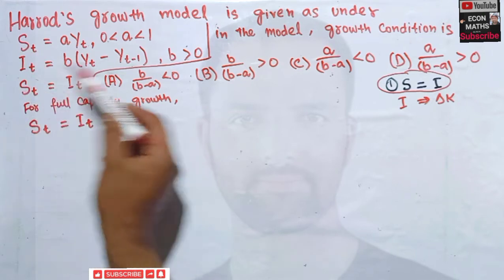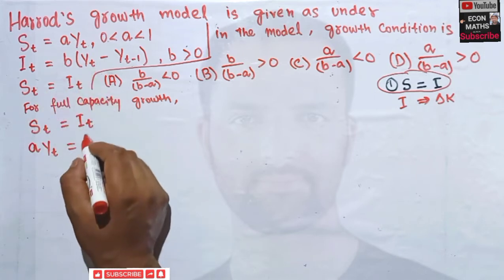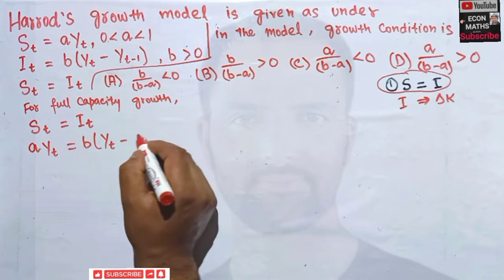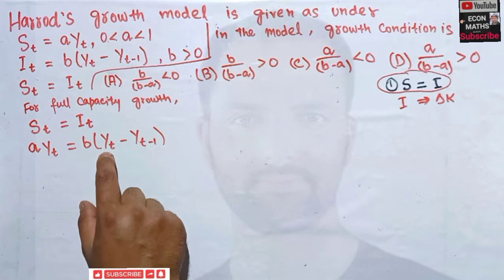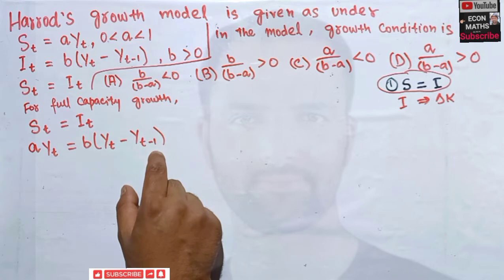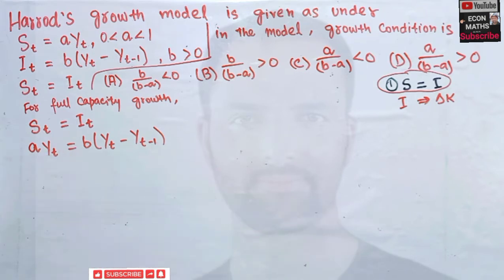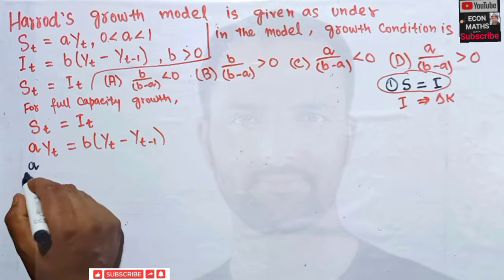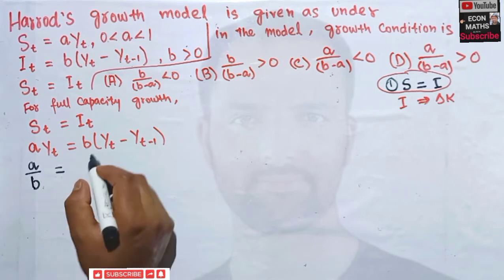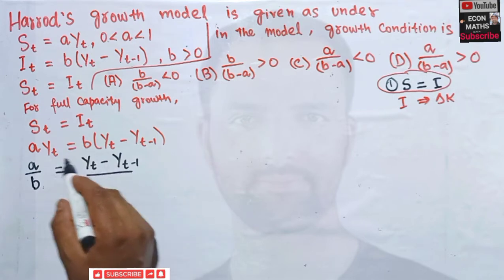We plug in the values of S_t and I_t and equate them. So: aY_t = b(Y_t - Y_{t-1}). Here, Y_t and Y_{t-1} are simply income in the current year (say 2021) and the preceding year (say 2020). This condition must be satisfied for growth in the Harrod-Domar model. Rearranging, we get: (a/b) = (Y_t - Y_{t-1}) / Y_t.